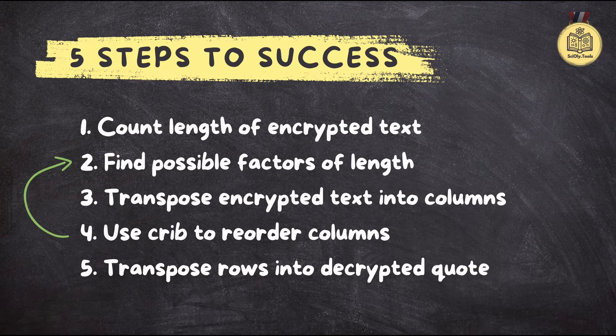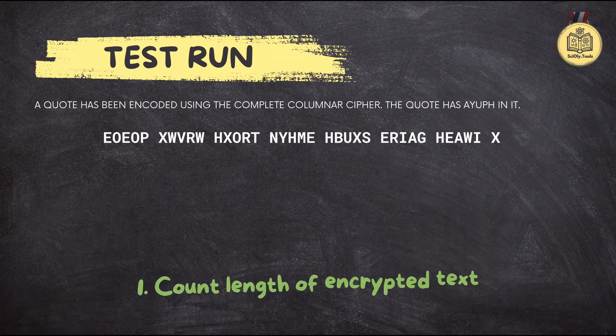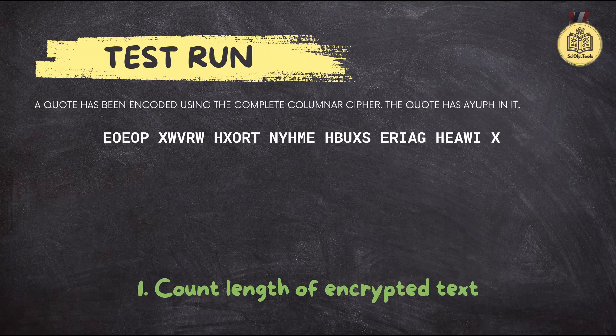I can imagine that feeling of finally seeing those crib letters all in a row — it must be so satisfying. It definitely is. So let's say you're at Science Olympiad and you get an encrypted message. Where do we even start? Like always, we start with the basics: count the letters in the message, no spaces. There are 36 letters.